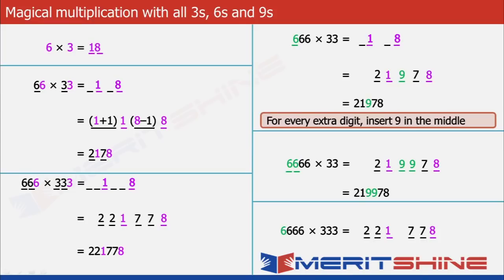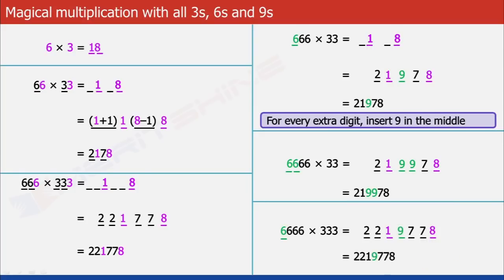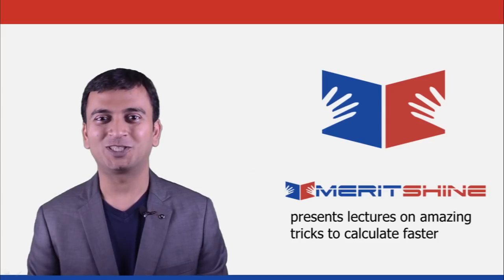Now we have one extra 6 to take care of, for which we will insert a 9 in the middle, thereby giving us 2219778 as our answer. Thanks for watching.